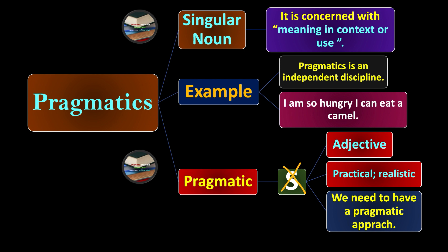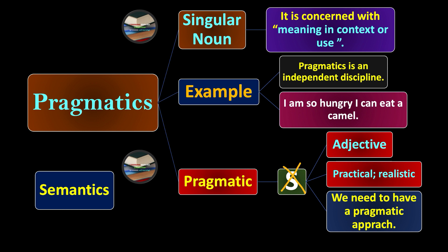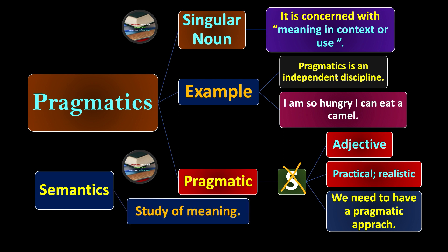In fact, both pragmatics and semantics talk about meaning, but semantics talks about meaning as it is—in the literal way, what is written, what is the connection between the words in a sentence.